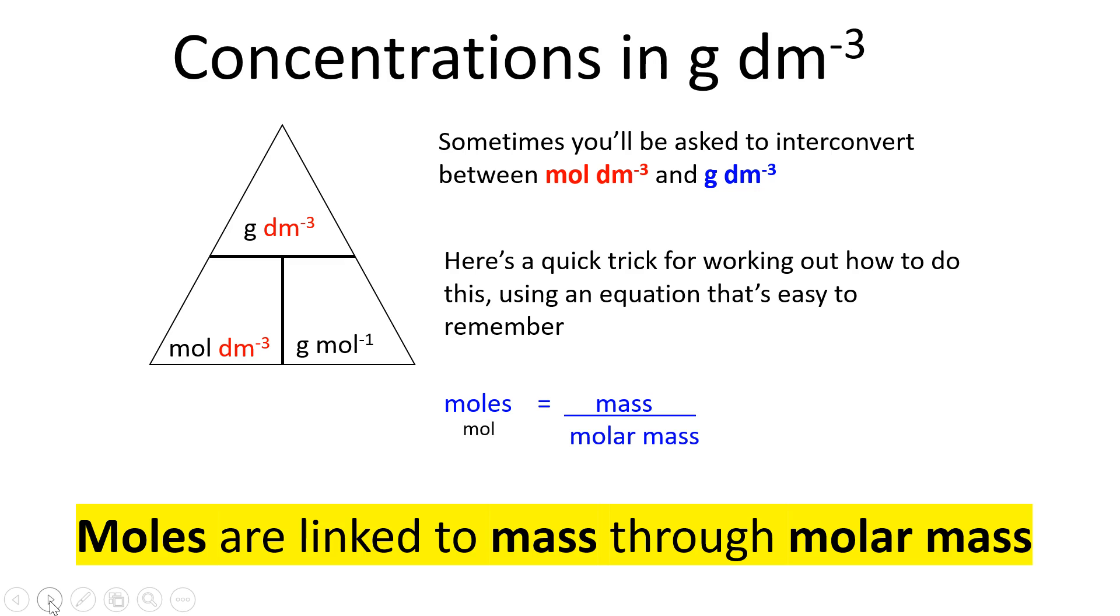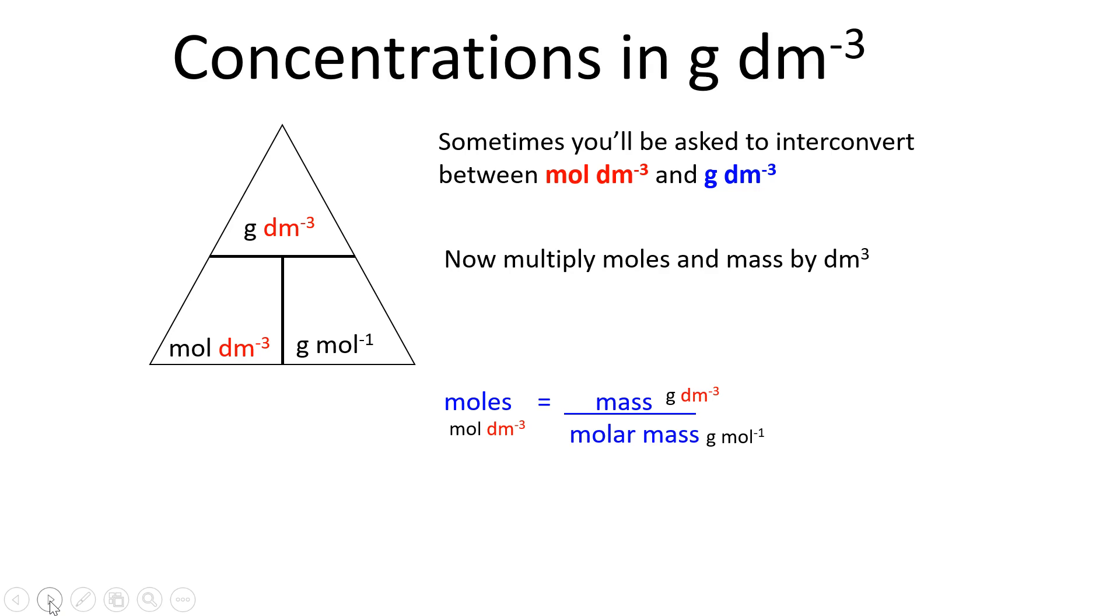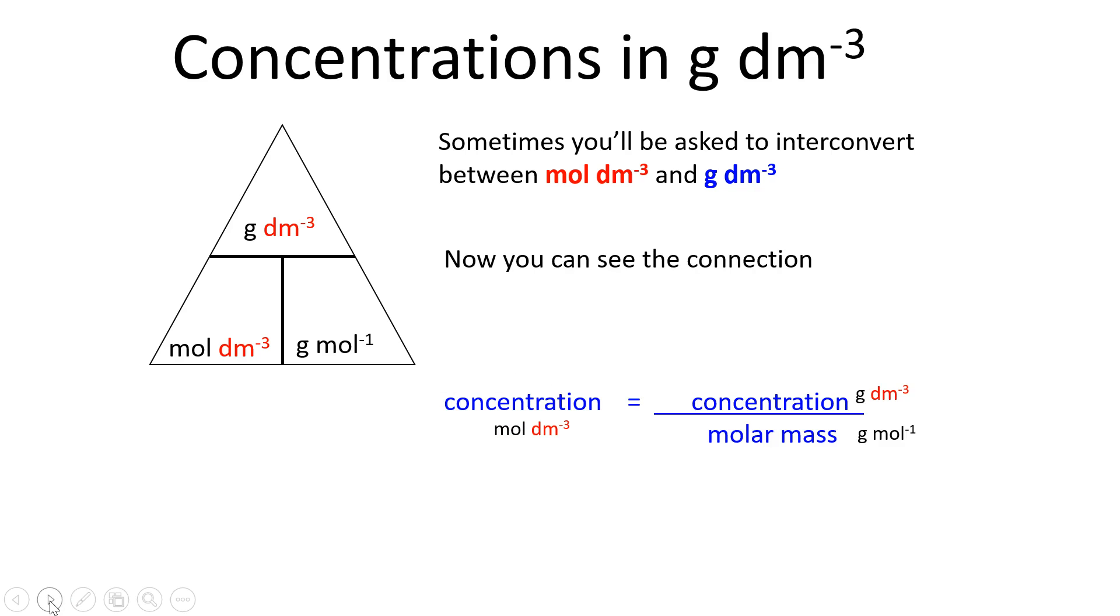and just put in the units and then change the moles to moles per decimeter cubed and the mass to grams per decimeter cubed, the mathematical connection between them remains the same. So if we cross out moles and mass and now call them concentration, that allows us to do this. So hopefully you can see there's a similar connection going on that you can make use of.